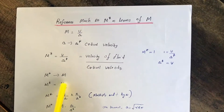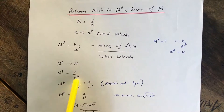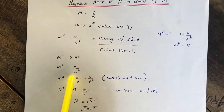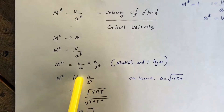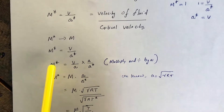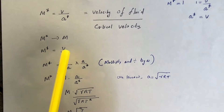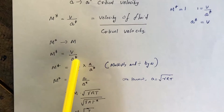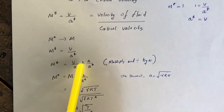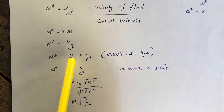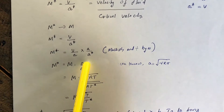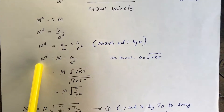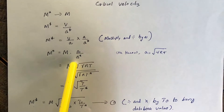We know M* is equal to V divided by A*, where A* is the critical velocity of sound. To bring in the term M, which is V divided by A, we multiply and divide by A, the velocity of sound. So we get M* = (V/A) × (A/A*). Since V/A is the normal Mach number M, M* becomes M × (A/A*).